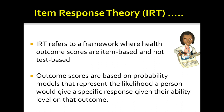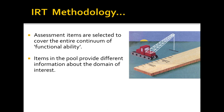To achieve these goals, we used item response theory, or IRT — a different method of developing a measure compared to classical tests. IRT refers to a framework where health outcome scores are item-based rather than test-based. Outcome scores are based on probability models representing the likelihood that a person would give a specific response to an item given the difficulty of the item and their ability level on the outcome being assessed.